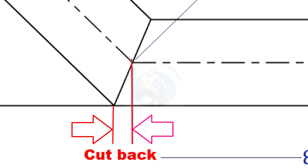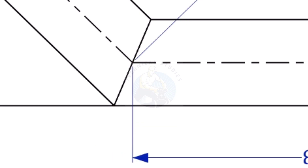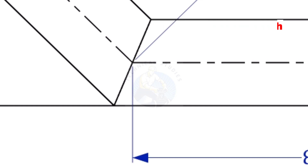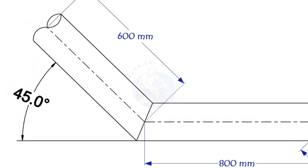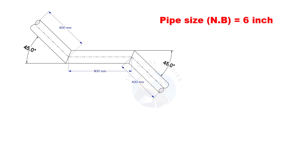To mark a miter cut, we need to know the cutback of the miter. In this offset, the nominal diameter of the pipe is 6 inch. The angle of the miter is 45 degrees. This method is suitable for cutback of any degree. The outside diameter of a 6 inch pipe is 168.3 millimeters.